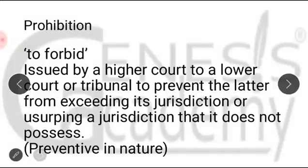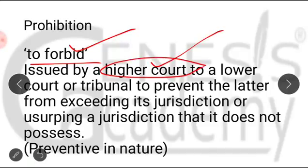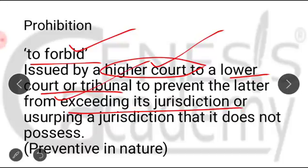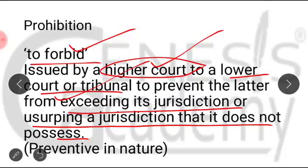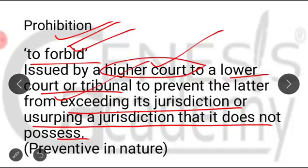Prohibition — the literal meaning is 'to forbid,' meaning to stop. It is issued by a higher court, here the High Court of Jammu and Kashmir, to a lower court or tribunal, preventing the latter from exceeding its jurisdiction or usurping a jurisdiction that it does not possess. In both cases, the High Court of Jammu and Kashmir can issue the writ of prohibition and stop the lower court from exceeding its jurisdiction. This writ is preventive in nature.